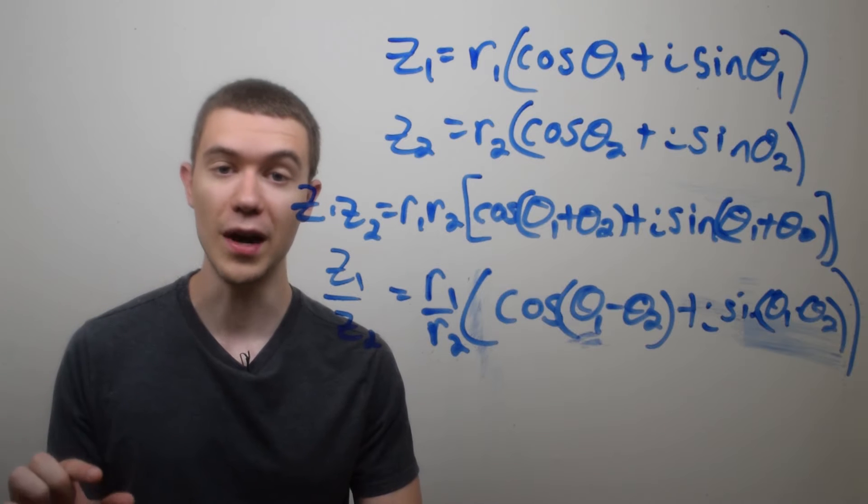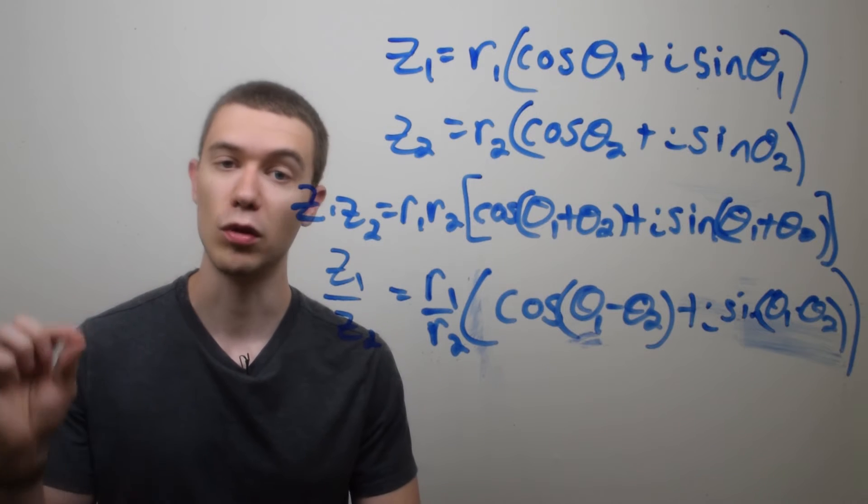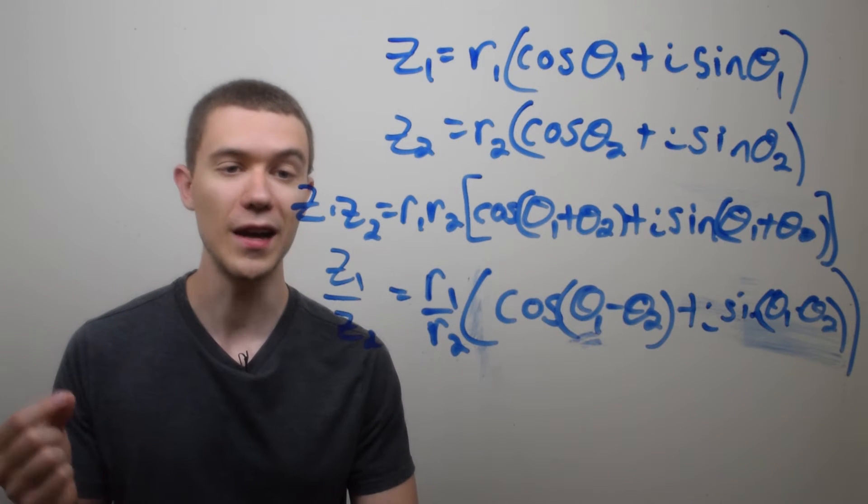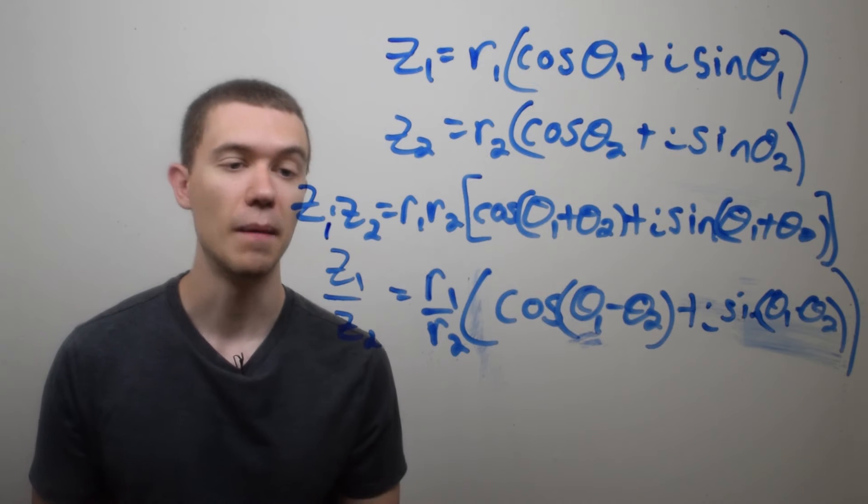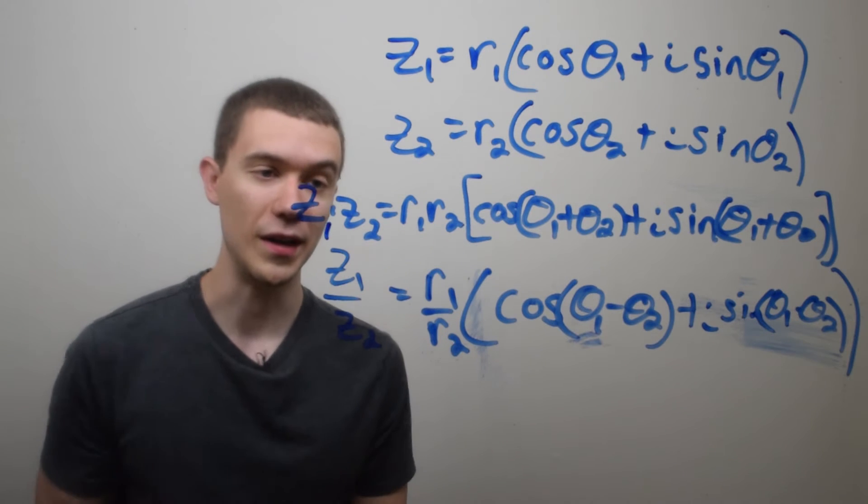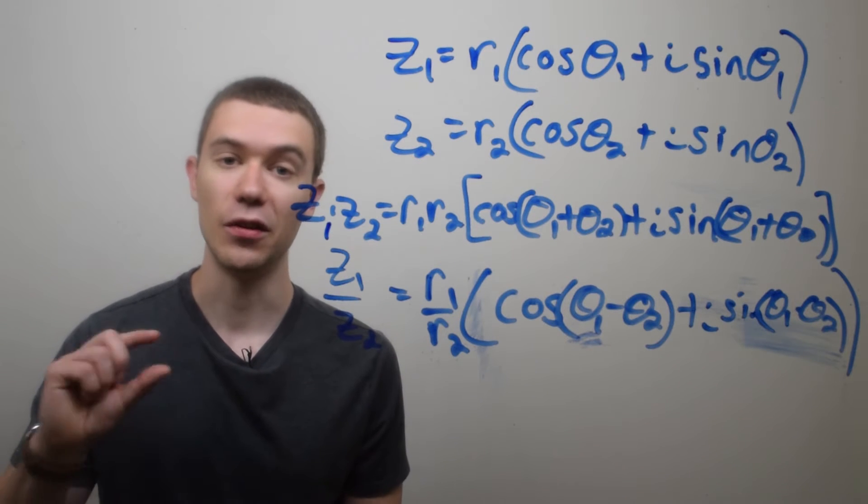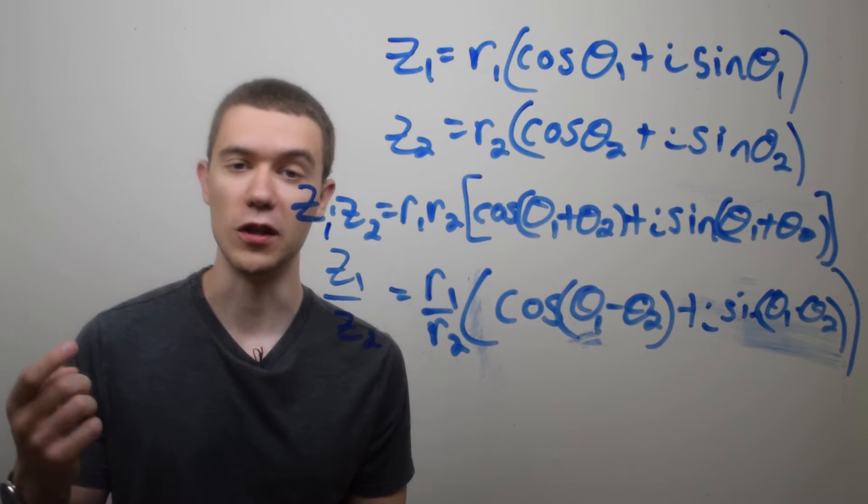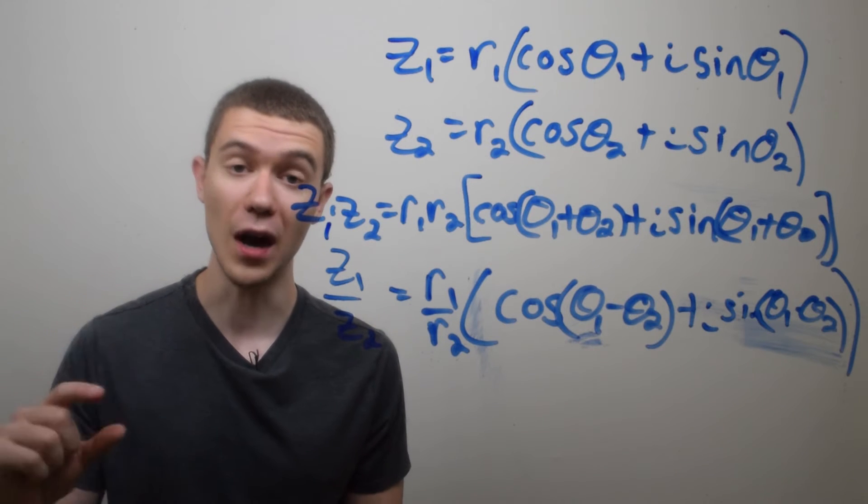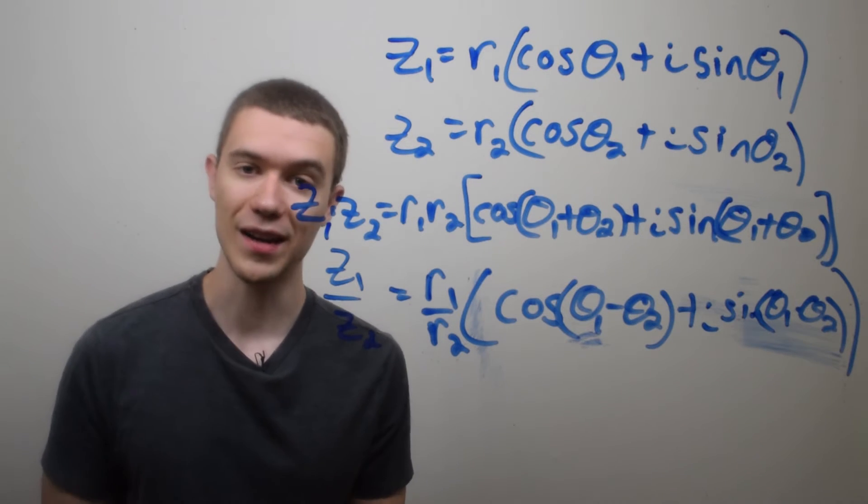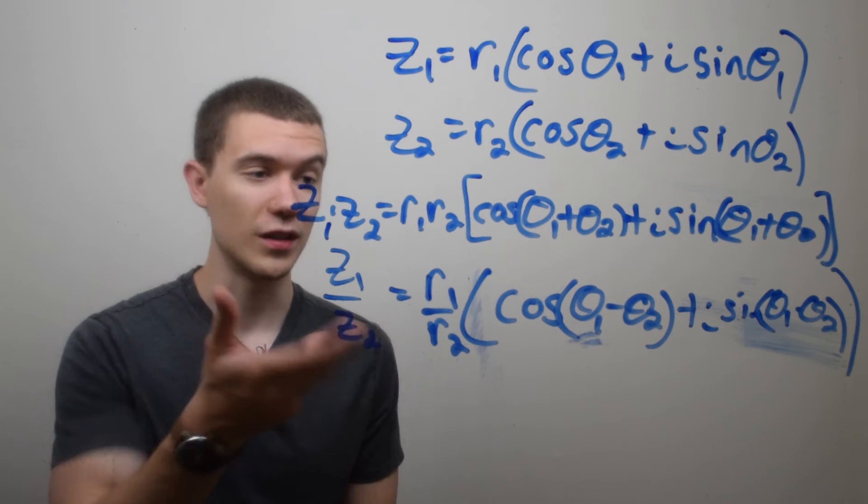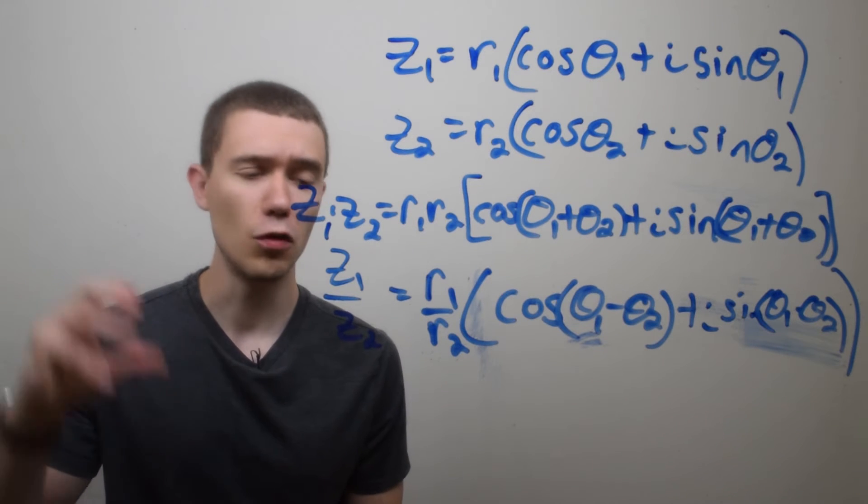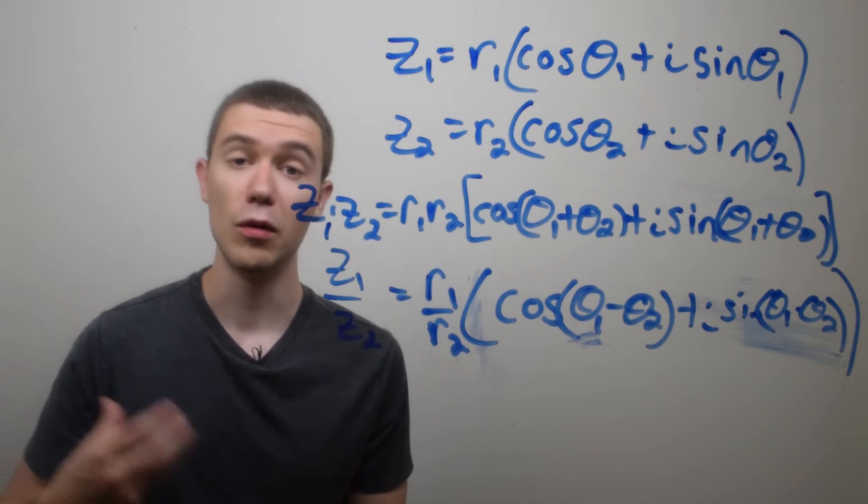And if I want to multiply or divide these complex numbers, it works very nicely because multiplication just means multiplying their radii and then adding their arguments. Similarly, dividing complex numbers just means dividing their modulus, dividing their radius, and subtracting their arguments. And it works just like this. Maybe the formula looks a little clunky, but it works really easily.